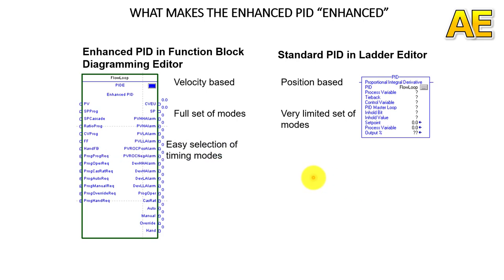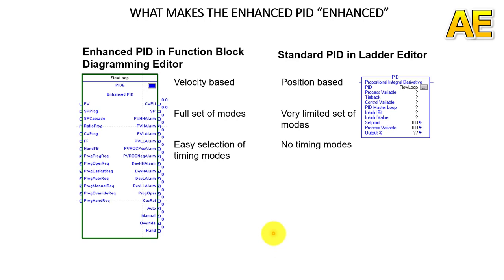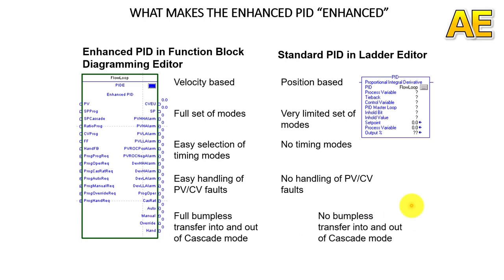The third difference is timing mode — PIDE has easy selection of timing mode, but standard PID has no timing mode. The fourth is handling of PV or CV: PIDE provides easy handling, but standard PID does not. And the final difference is that PIDE is easy to transfer into or out of cascade mode, while standard PID is not.